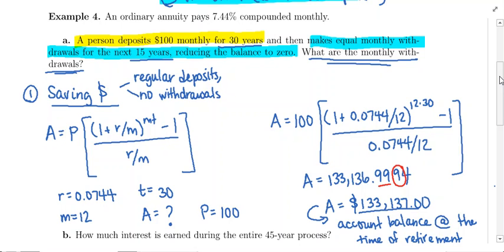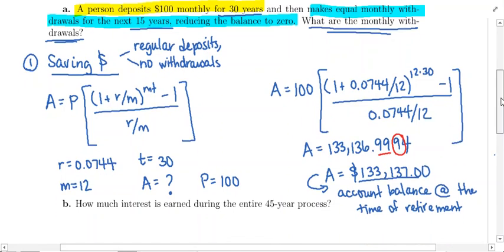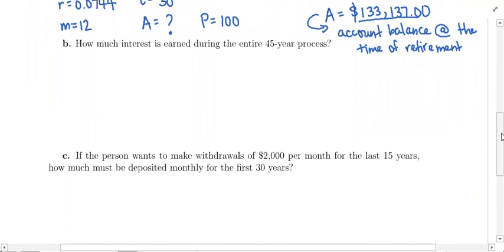The savings phase happened for a 30-year period. The withdrawal phase happened for a 15-year period, for a total of 45 years. We're trying to figure out how much interest was involved from both the savings phase and the withdrawal phase combined. You might find this problem a little bit challenging to think about.